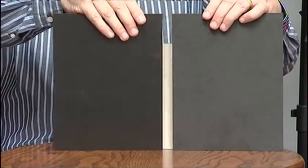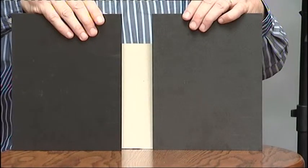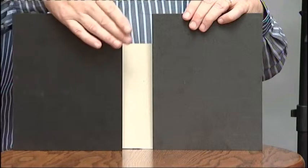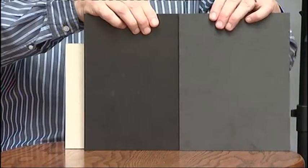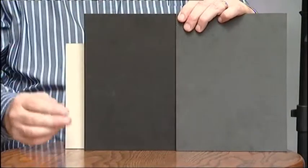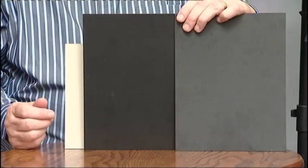Now it follows that if the flash were to fire whilst the blades are traveling across the sensor, the only part that would be exposed is the bit between the blades. So we end up with a section or sections of our image black, just like this. So the flash synchronization speed of your camera is the fastest speed at which the blades open fully before they start to work together.